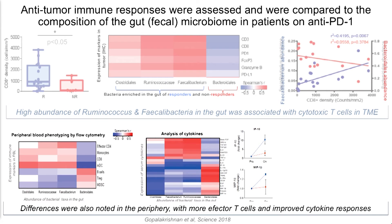We found the same exact thing in the blood. Depending on the gut microbiome, if patients had a good microbiome they had more effector CD8 cells — like CAR T-type cells — whereas if they had an unfavorable microbiome, they had more regulatory T-cells.